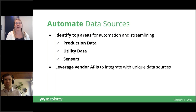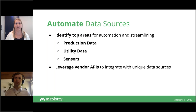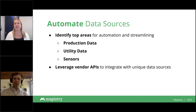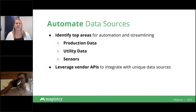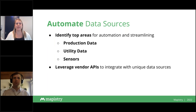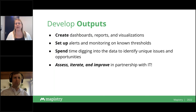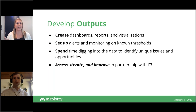After you start data collection, the next thing to look at is automating data sources. A lot of new customers are actually starting here — with automating data sources — and bringing people in later. To automate, identify those areas: who are you asking to send you data regularly? What information are people sending you — production data, utility data? Are you collecting data from flow meters or other sensors? Then work with your IT team and software provider to leverage their API to get data directly from its source into your central software solution.